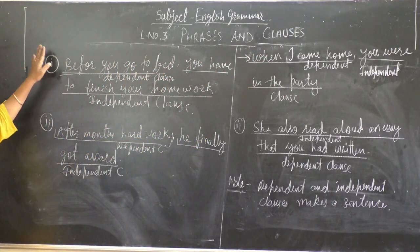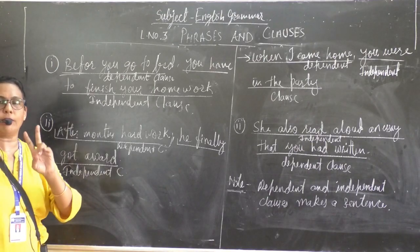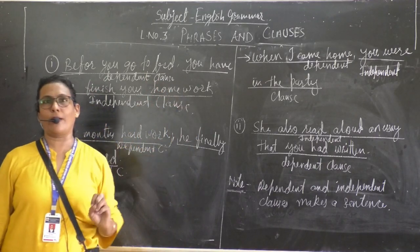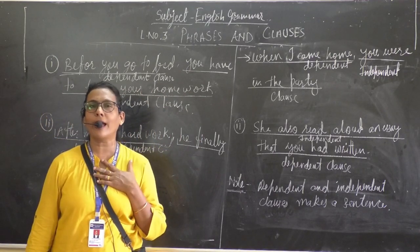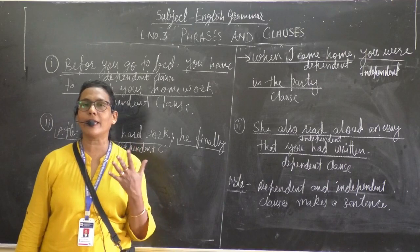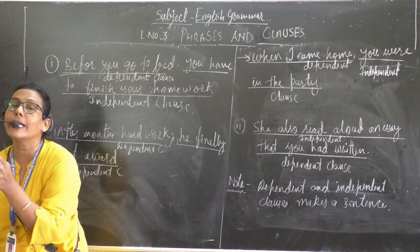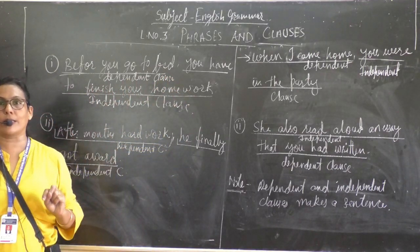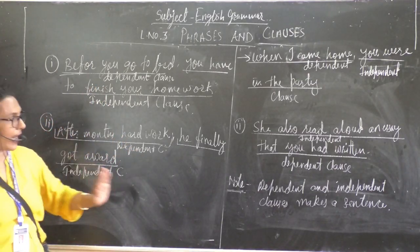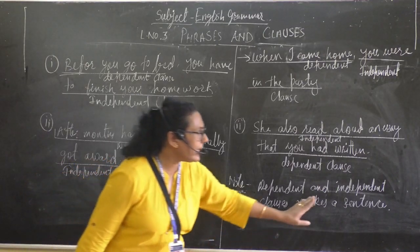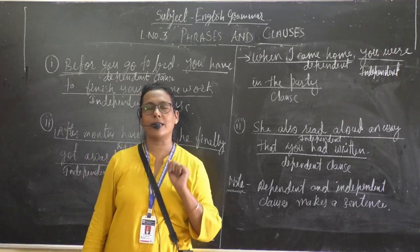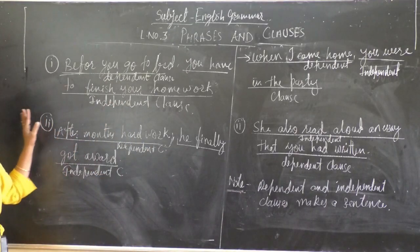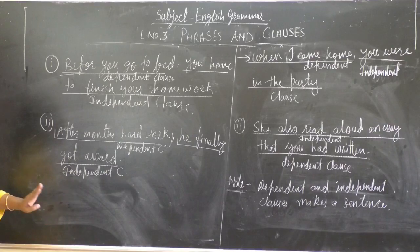Then we learnt the types of clauses. The two types of clauses are: one is the independent clause and the other is the dependent clause. The main thing is that the dependent and independent clause together make the sentence. With a few more examples, I think you understood very well.